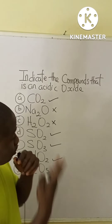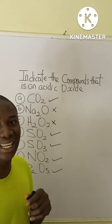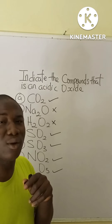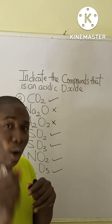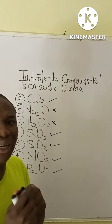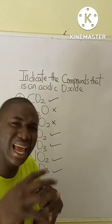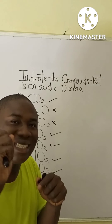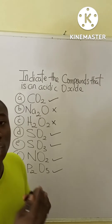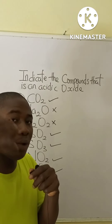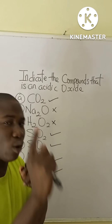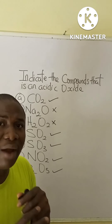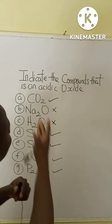You might be wondering why certain options are called acidic oxides. Before we explain, the first question we ask is: what is an oxide? An oxide is a compound that contains oxygen with one other element. The type of element that combines with oxygen determines the type of oxide formed. Oxides are binary compounds because they contain exactly two elements.